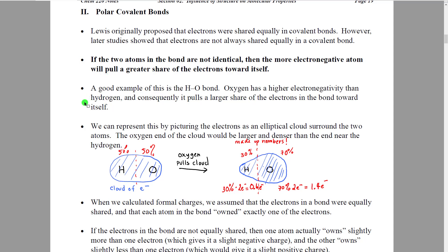A good example of this is the hydrogen-to-oxygen bond, which we find in many common substances including water. When we look at the hydrogen-to-oxygen bond and then look at the periodic table, we see that oxygen has a higher electronegativity than hydrogen. As a result, it's going to pull more than its 50% share of electrons in the bond toward itself.